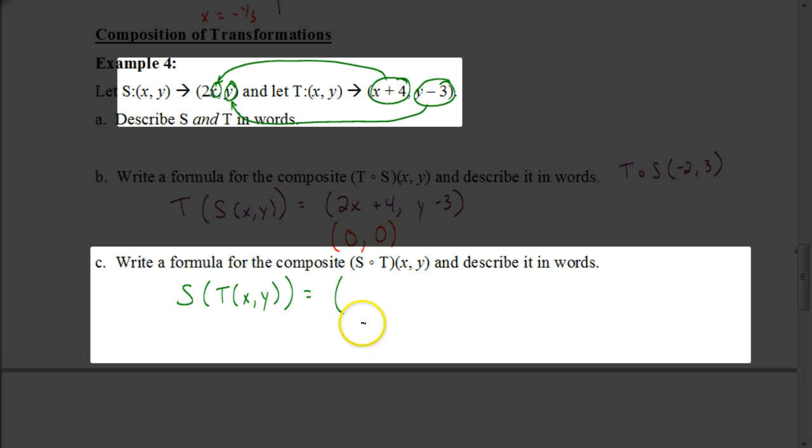So now this one's going to require a little bit more work. Because it's going to be 2 times the expression (x + 4). That will give you your x value. And then the (y - 3), when we replace y, which is (y - 3), it stays the same. So if I simplify this, this will be (2x + 8, y - 3).